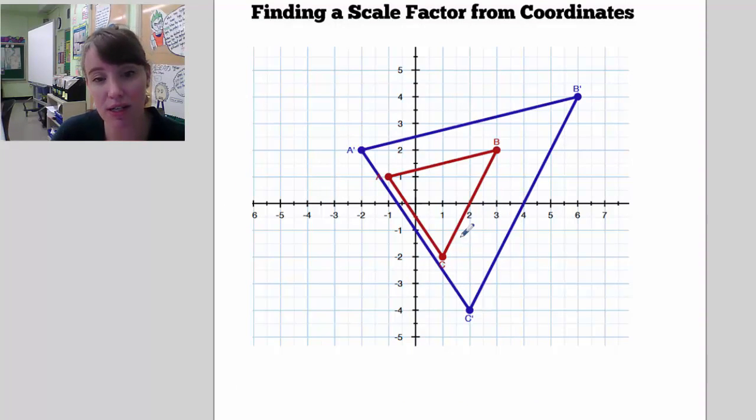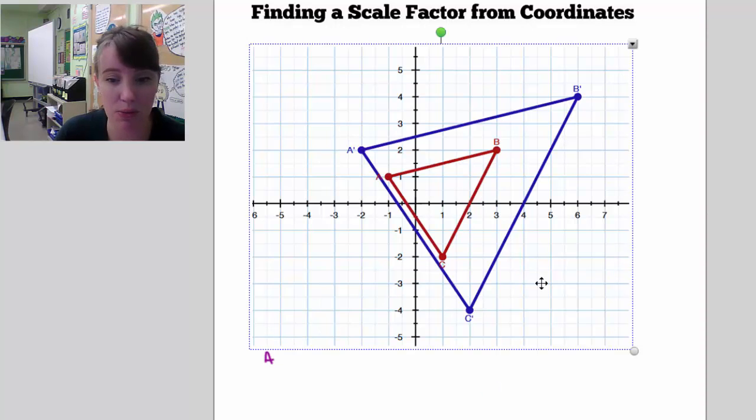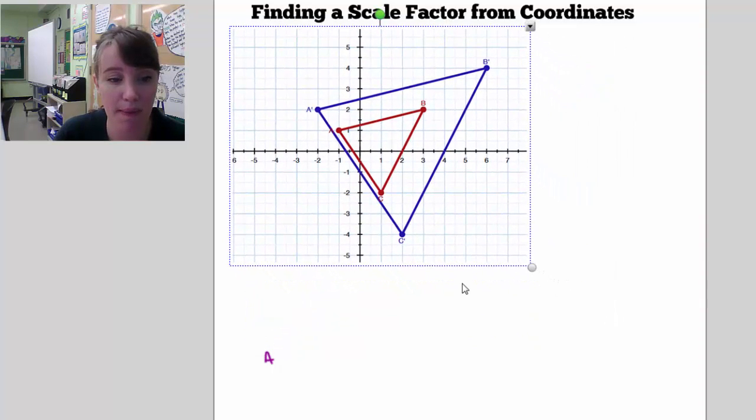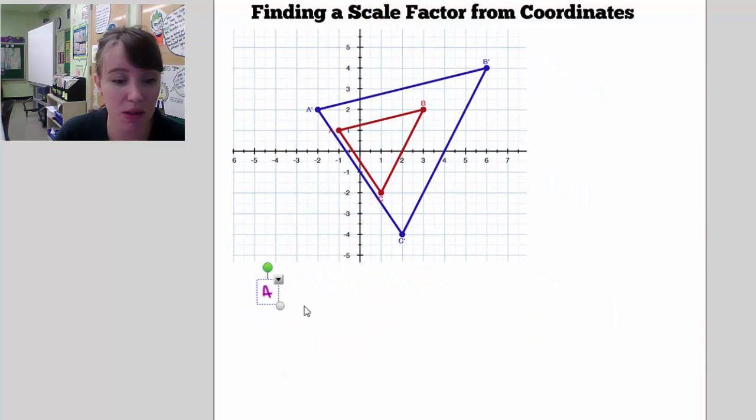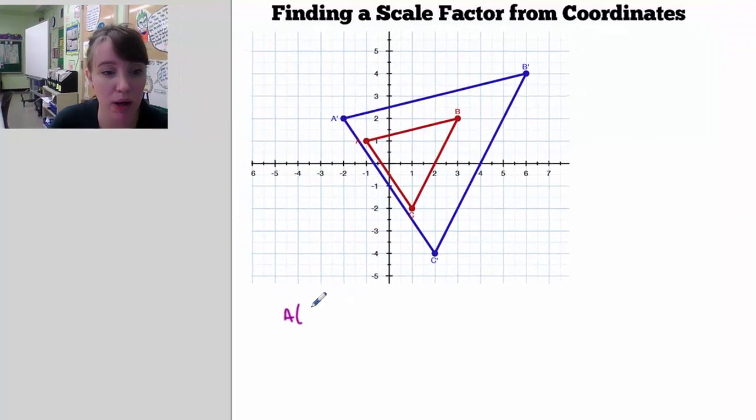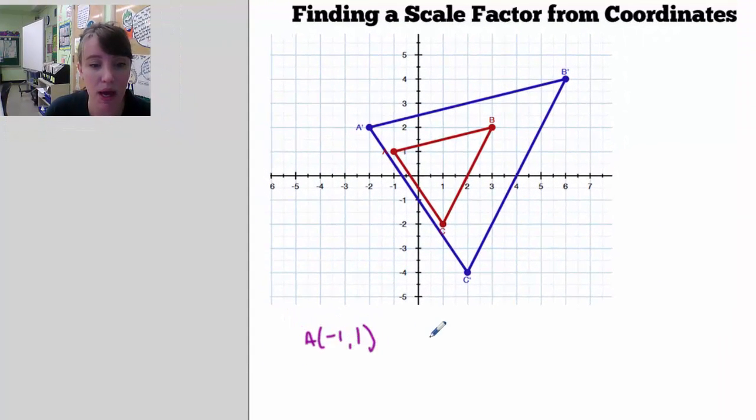You can also find scale factor from coordinates. So here, if I just look at the coordinates of the points, so let's say the A coordinate in the original is negative 1, 1, and the A prime coordinate is negative 2, 2.